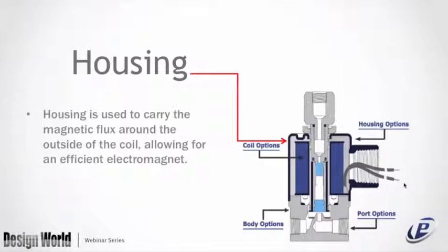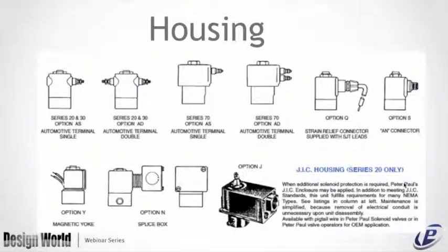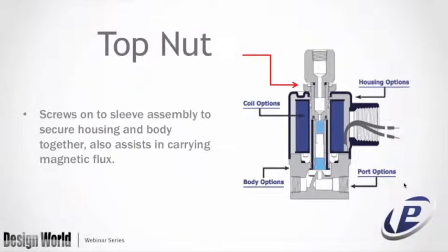The housing is used to carry the magnetic flux around outside the coil, allowing for an efficient electromagnet. Depending on the application, typical housings include single or double automotive, explosion proof, special plating or stainless steel for corrosive environments, and even painted or chrome for aesthetics. The top nut screws onto the sleeve assembly to secure the housing and body together and also assists in carrying magnetic flux.